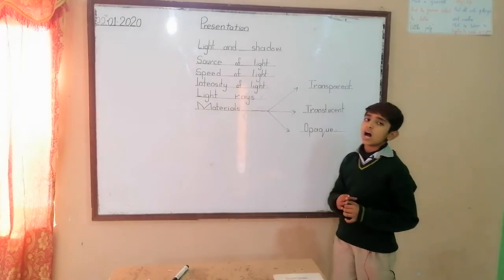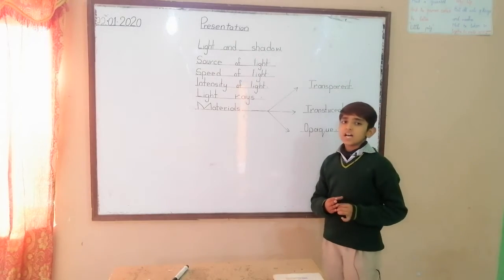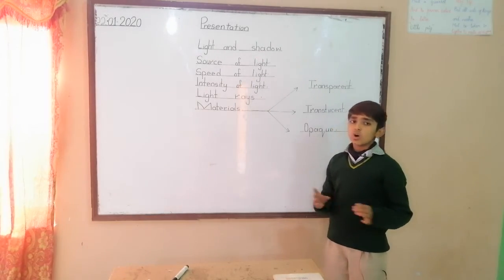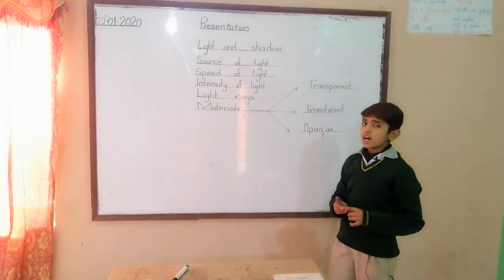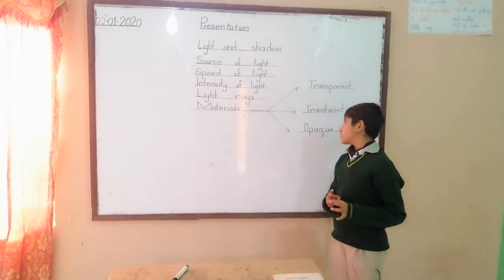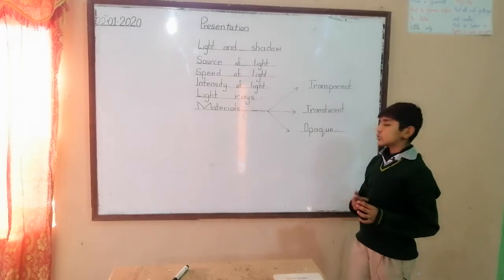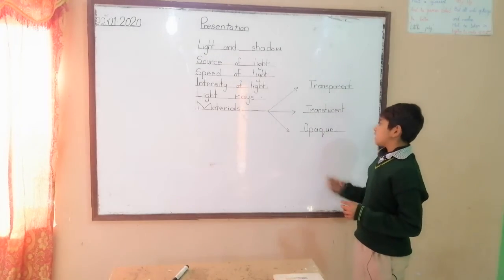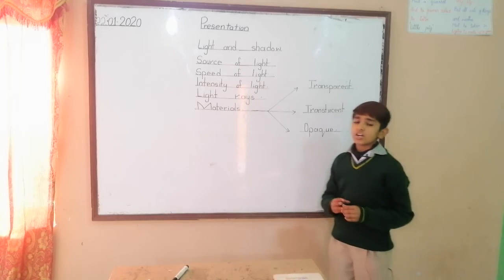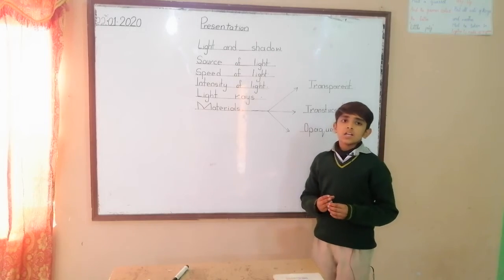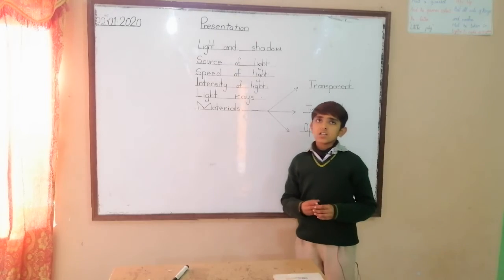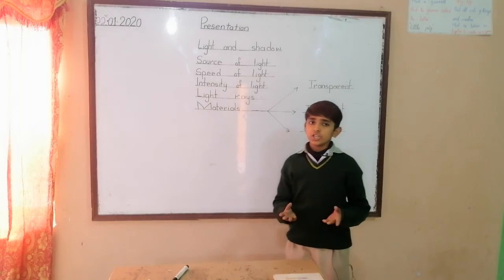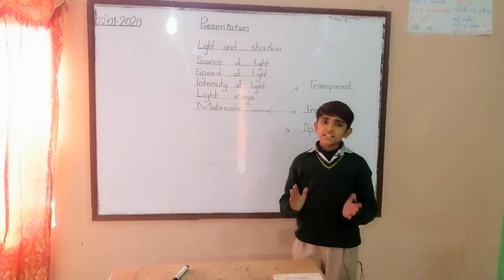And now I will tell you about opaque material. Materials that do not allow light to pass through them are called opaque material. For example, wall, wood.